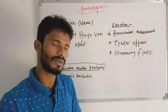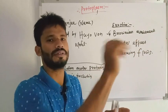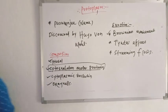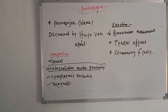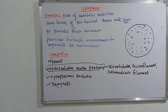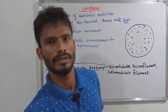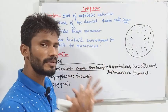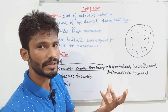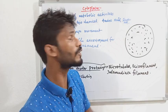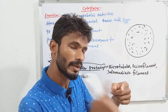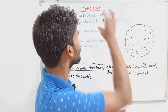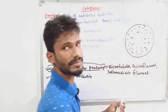The protoplasm protects the cell organelles. Cytoplasm — 'cyto' means cell, 'plasm' means liquid — so cytoplasm is the liquid of the cell. Protoplasm includes liquid along with the nucleus and other cell organelles. Cytoplasm means everything apart from — except — the nucleus.